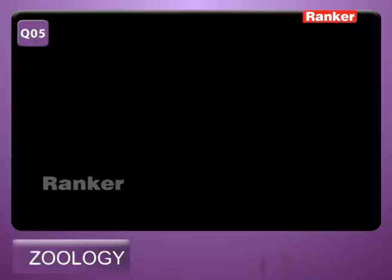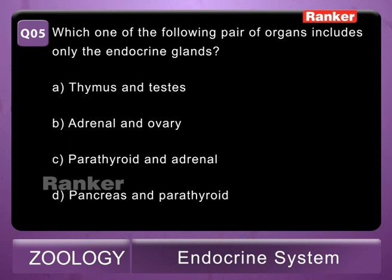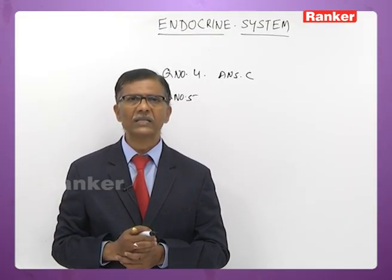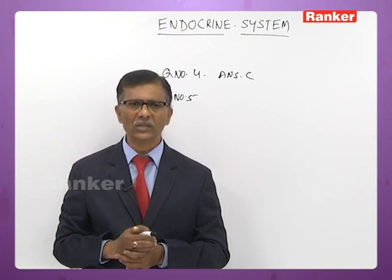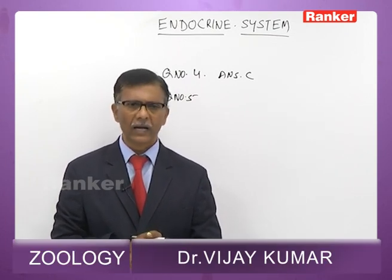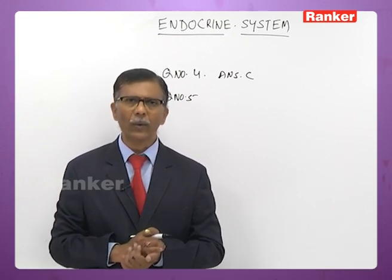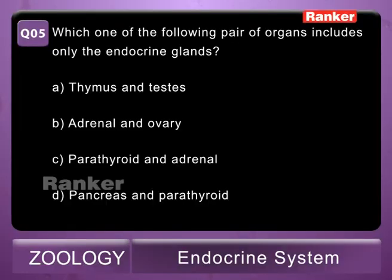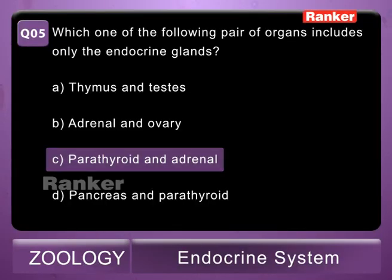Fifth question: which pair of organs includes only endocrine glands? A - thymus and testis; B - adrenal and ovary; C - parathyroid and adrenal; D - pancreas and parathyroid. Thymus is an endocrine gland but testis also has somatic functions, so it is not exclusively endocrine. Ovary is a mixed gland. Parathyroid and adrenal are both exclusively endocrine glands. So fifth question answer is C — parathyroid and adrenal.